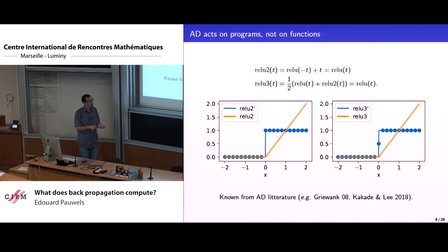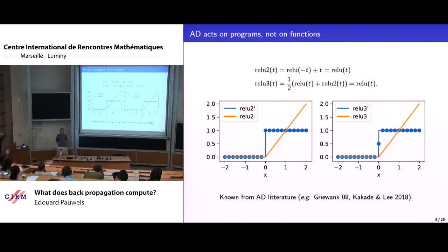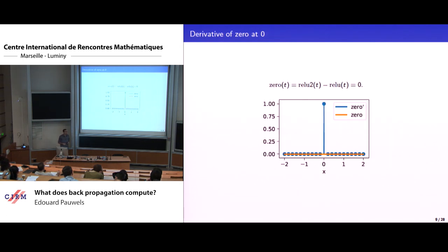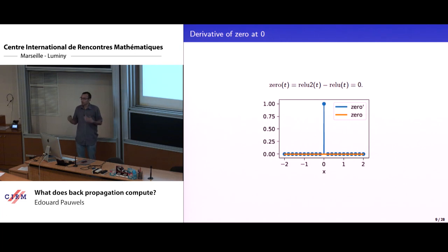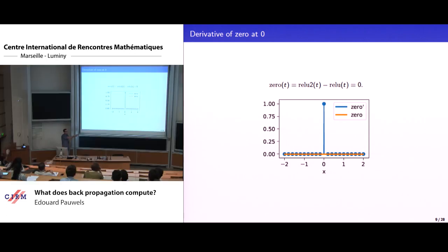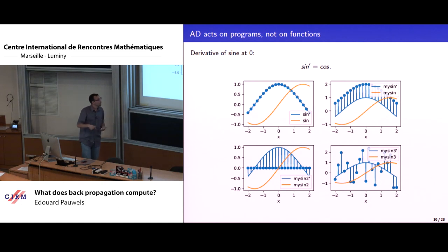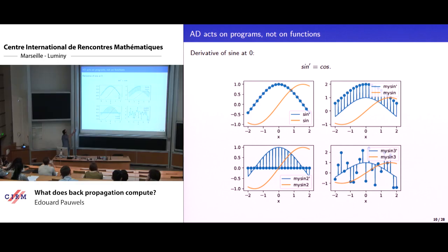This highlights that automatic differentiation does not directly act on functions — it acts on programs which implement functions. If I take two different programs for the same function in the non-smooth world, I may get different results. In the convex world this still looks fine, since values are between zero and one which is the subgradient of relu at zero. But in the non-convex world I can do much worse — I can construct an implementation that computes the zero function, yet automatic differentiation says the derivative at zero is one. This does not correspond to any notion of generalized derivative, and you may use this to modify derivatives at prescribed points in a more or less arbitrary way.